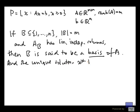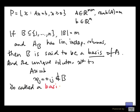And the unique solution x star to the following system Ax equal to b, xj equal to 0 with j not in B, is called a basic solution to the system Ax equal to b determined by B.